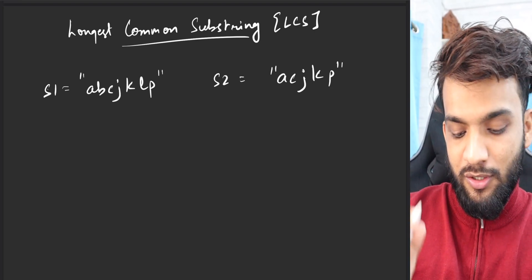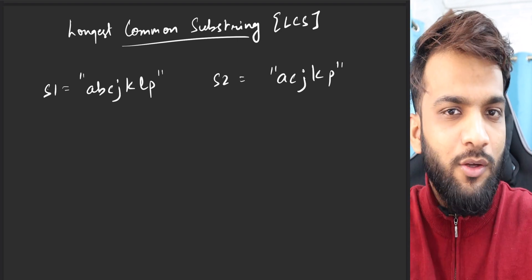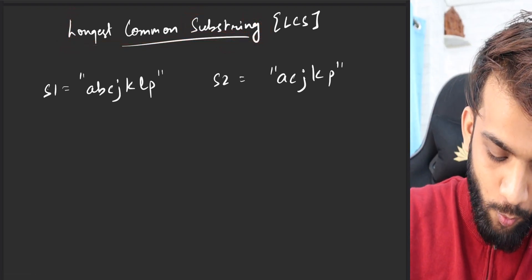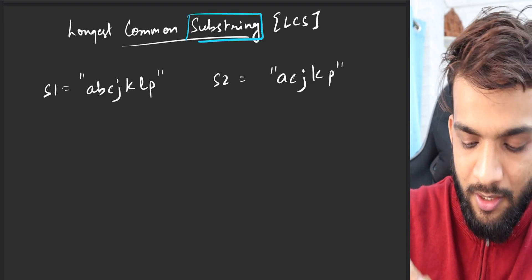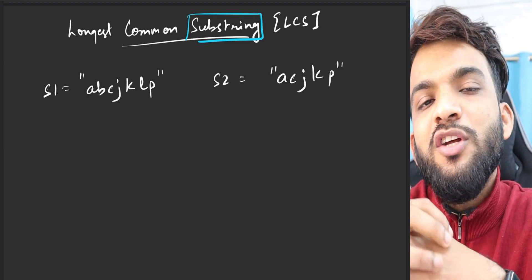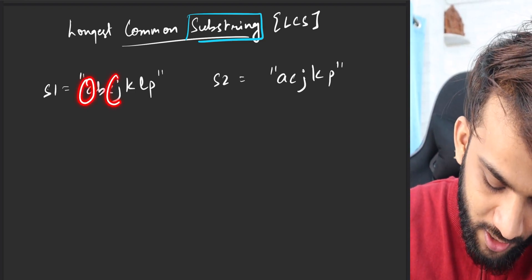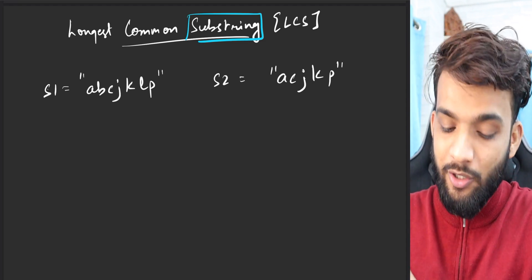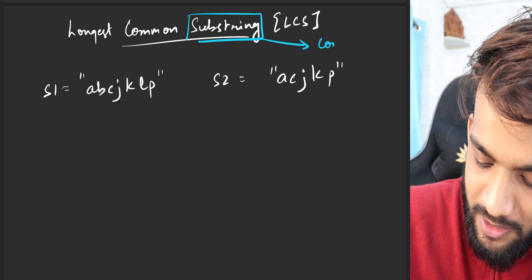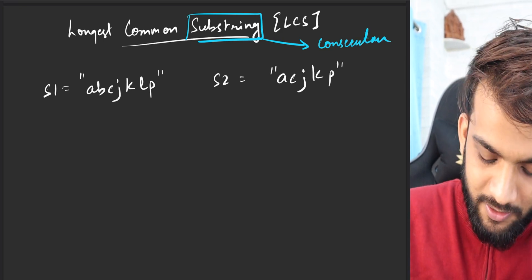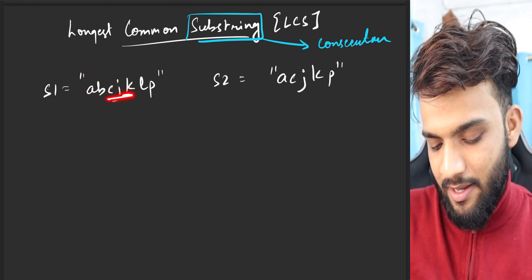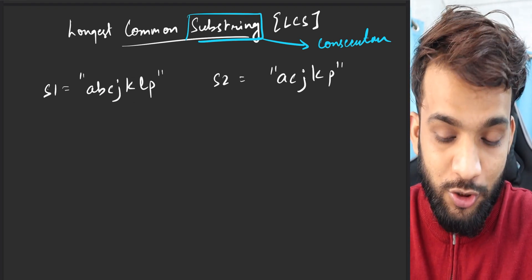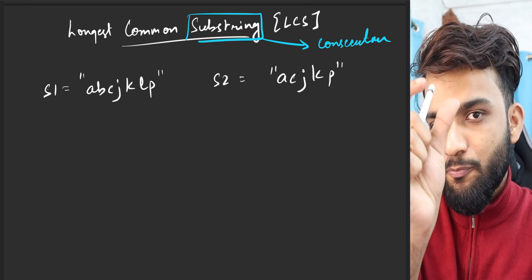Welcome back. In this video we will be solving a different problem: Longest Common Substring — substring, not subsequence. A subsequence can be non-consecutive, like 'a j p', but a substring has to be consecutive. It cannot have any characters left in between. The definition of a substring is any consecutive portion of a string.